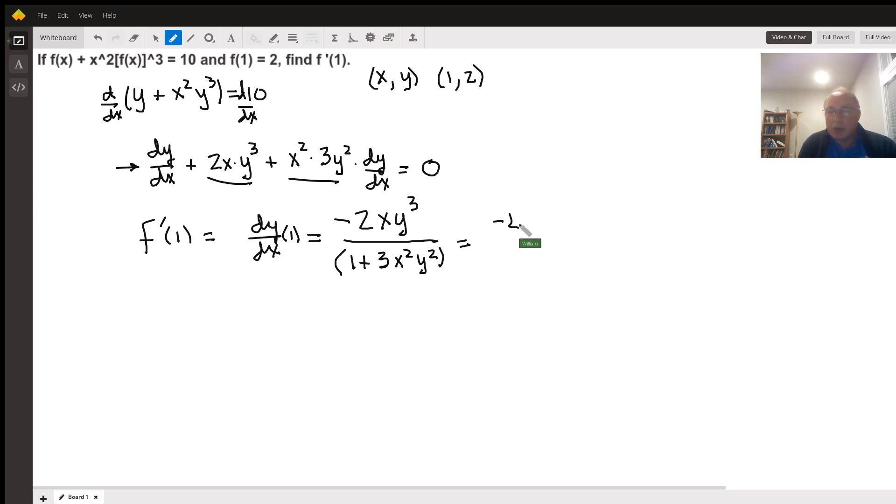So minus 2 times 1 times 2 cubed divided by 1 plus 3 times 1 squared times 2 squared,